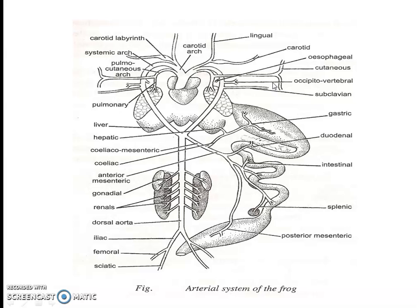From the systemic trunk, the esophageal artery arises. This is the esophageal artery. And also the subclavian artery, which provides blood to the forelimb.